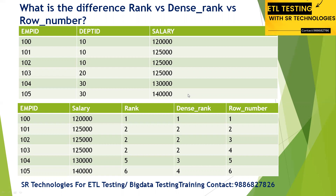By understanding this data, let's see how RANK works, how DENSE_RANK works, and how ROW_NUMBER works. When you apply ORDER BY salary ascending — smallest to largest — for 20,000 the rank is 1, dense rank is 1, and row number is 1. For 25,000, rank is 2, dense rank is 2, row number is 2. When values are different, all three functions work in the same way.